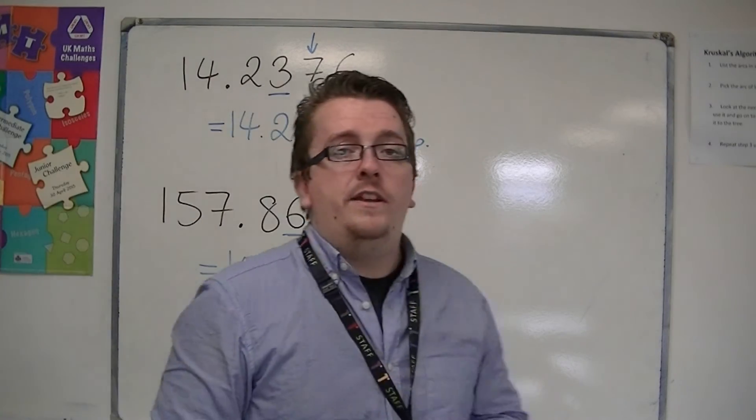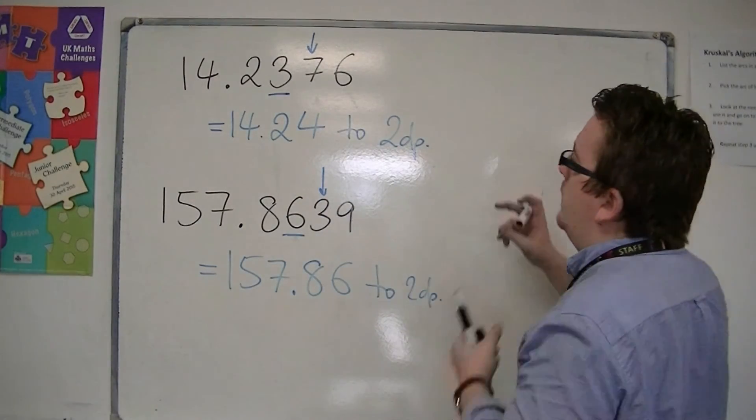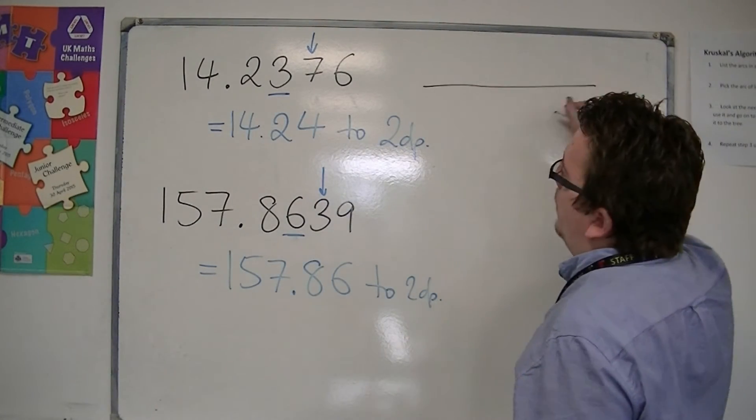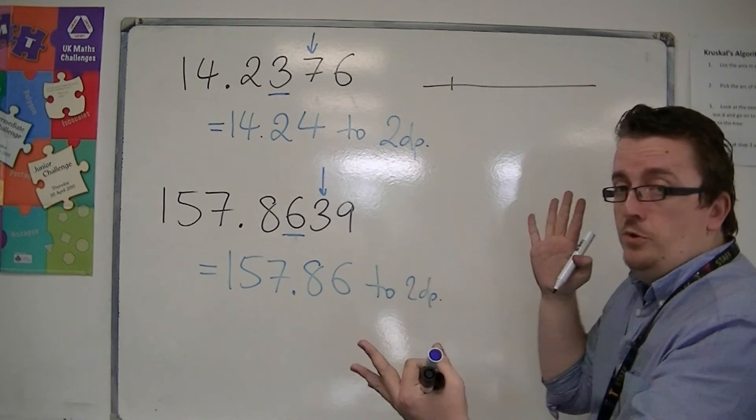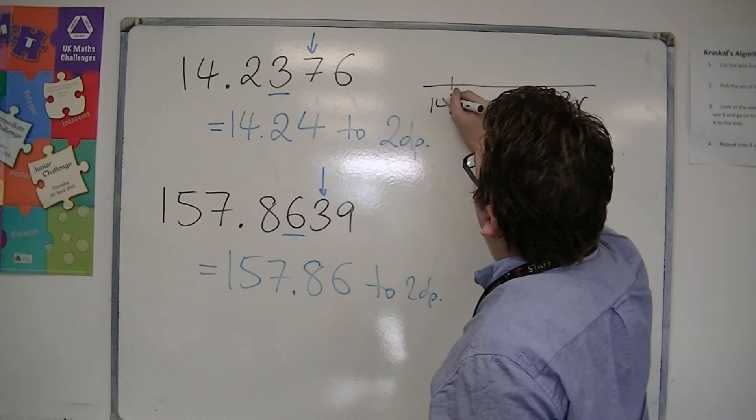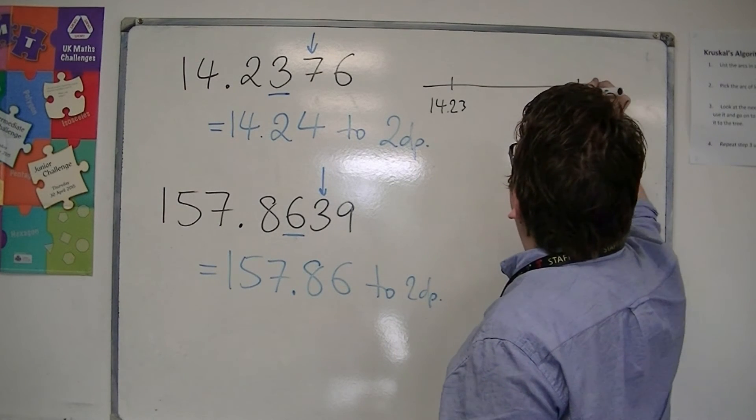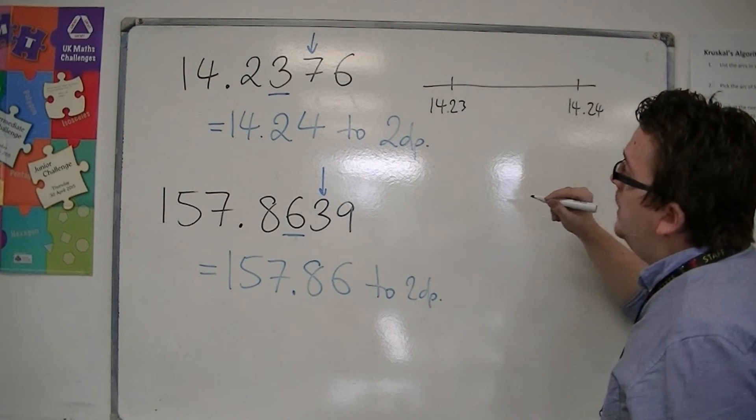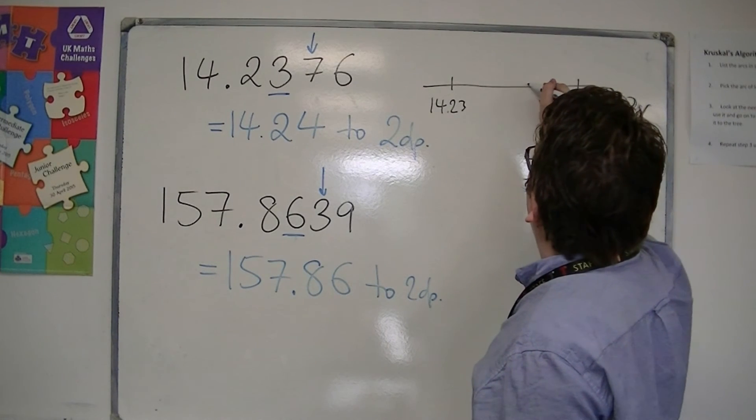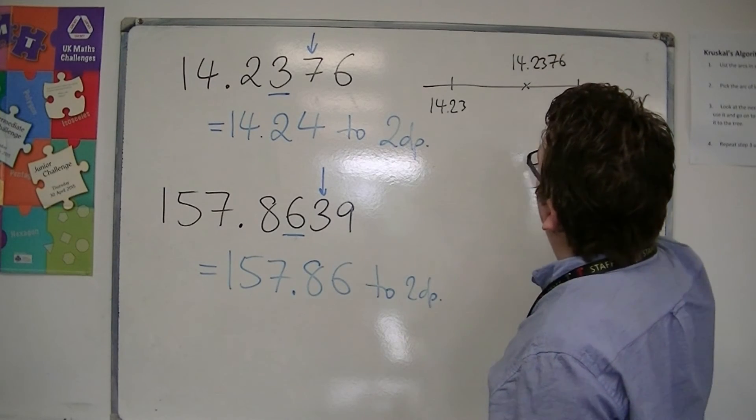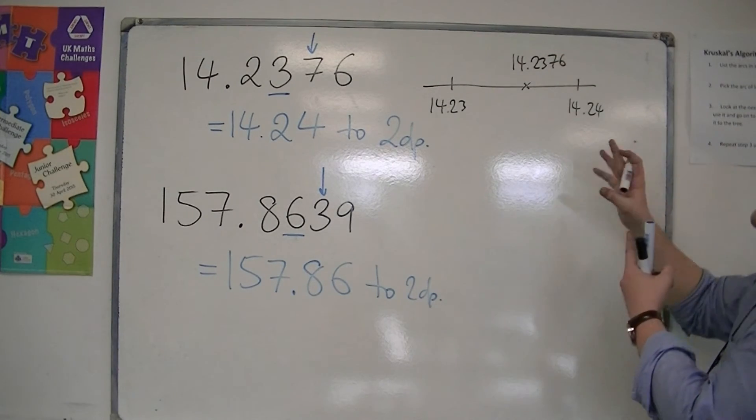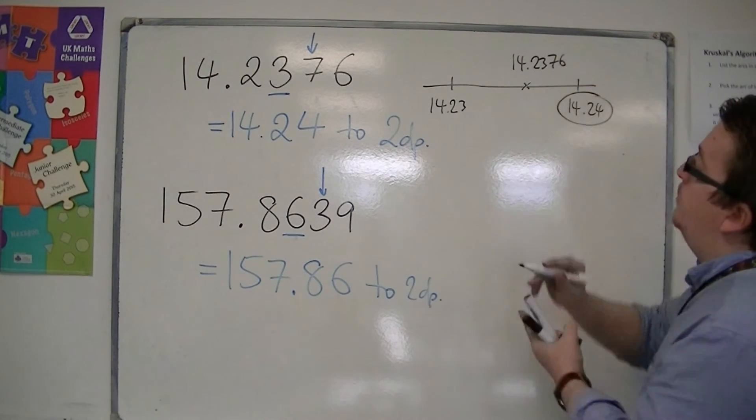So on our number line, if you're going, that's a little bit odd, I can't quite follow that. On our number line, what it's looking at is having split the number line up to two decimal places. We're at 14.23 and 14.24, and 2376 is roughly about there. So 14.2376 is close to the 14.24.